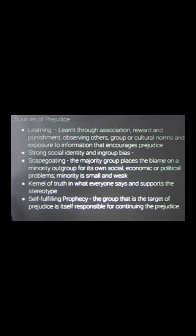The next point is scapegoating. It refers to one's tendency to blame someone else for his own problems. The majority group places the blame on the minority group for its own socio-economic problems, since the minority is small and weak, and hence forms prejudice against them. Next is kernel of truth — our tendency to support what everyone is saying and develop that stereotype in us.